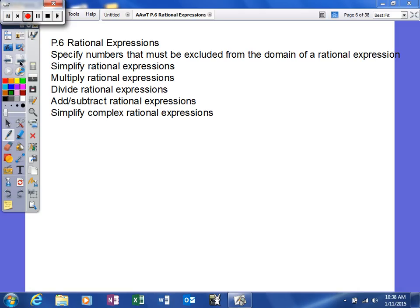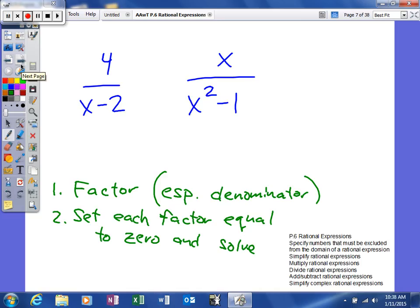Should be a fun little section here. First thing we're going to talk about: specify numbers that must be excluded from the domain. To do this, basically a rational expression—we've talked about these—it's rational because it's a fraction. That's what we're talking about with these fractions.